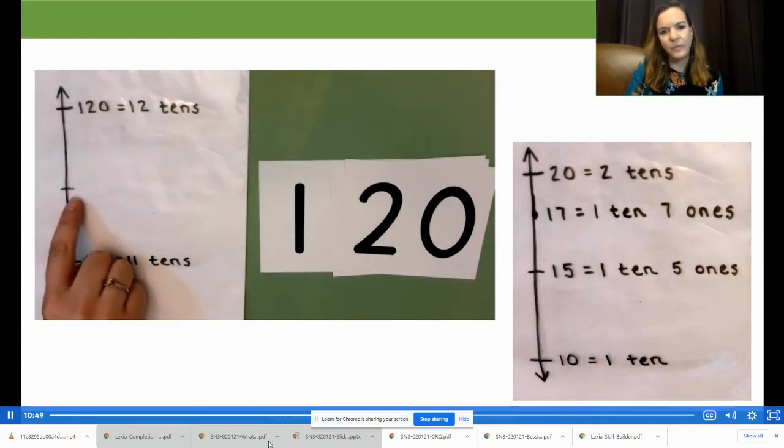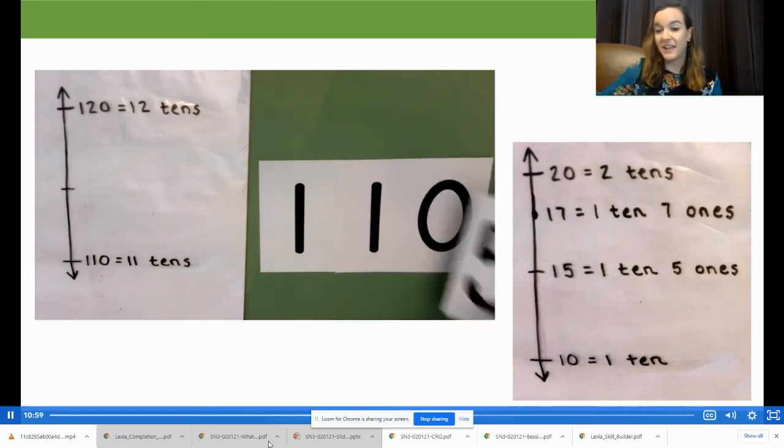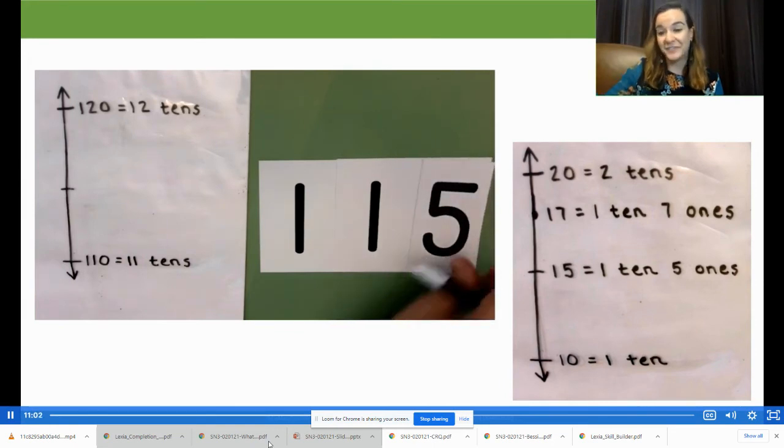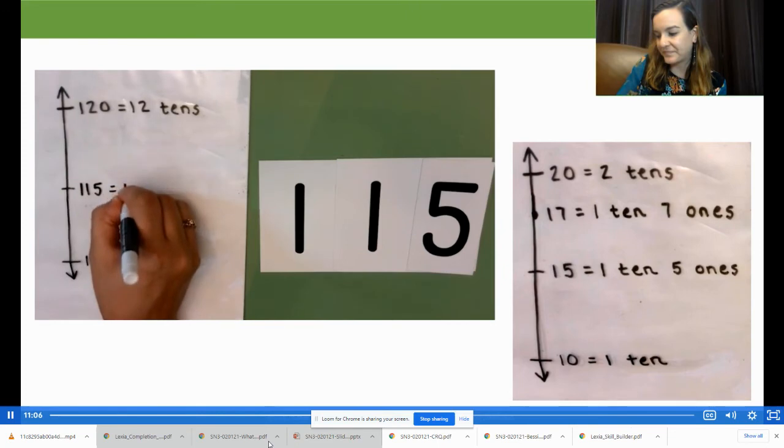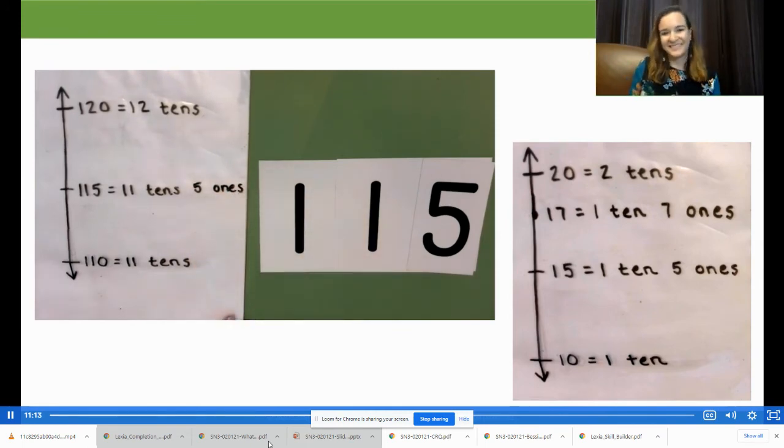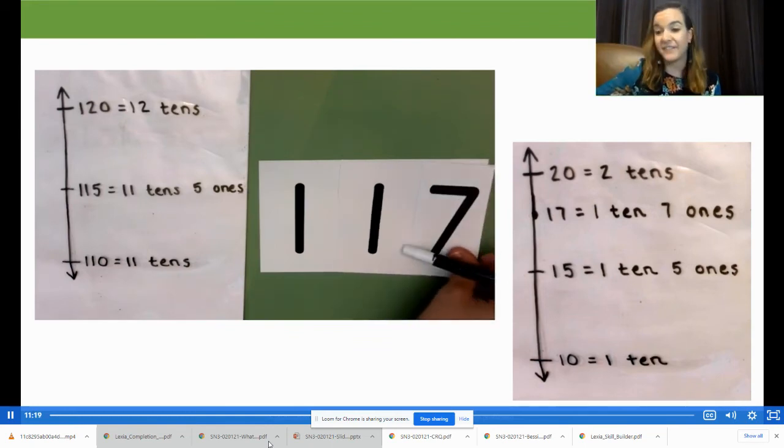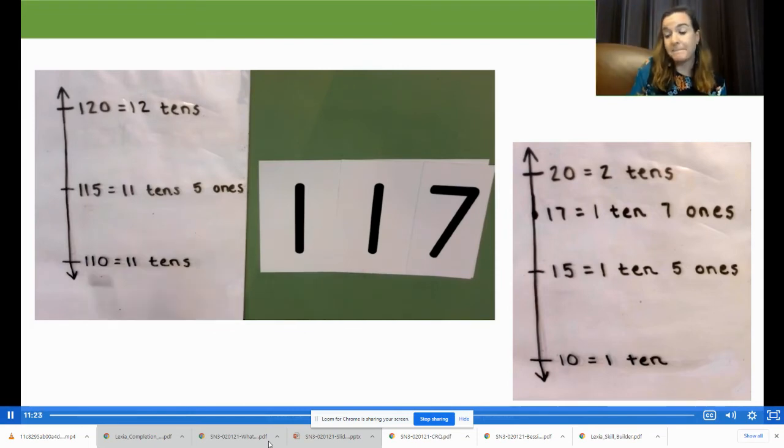How should we label our halfway point? 115, which we can see is 11 tens, five ones. Is 117 more or less than halfway between 110 and 120? Discuss out loud how you know. It's more than halfway.